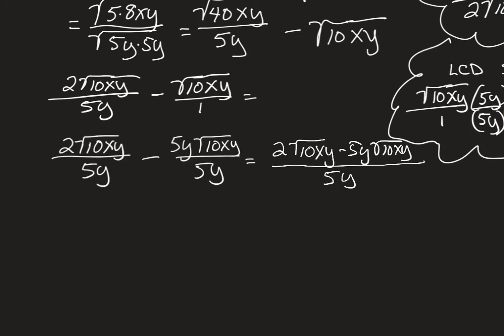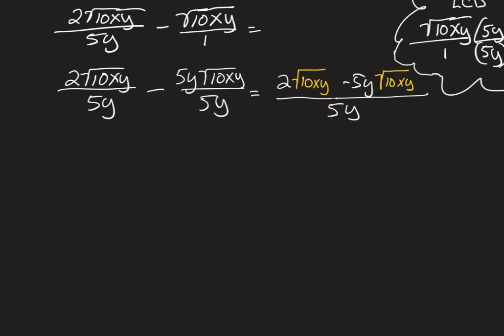But this still looks kind of complicated. If you look closely, though, you have a common factor which can be removed. That common factor is the square root of 10xy. And if you remove that from the first term, you're left with 2. And if you remove it from the second term, I'm speaking about in the numerator, you have 2 minus 5y. It is still all over 5y.